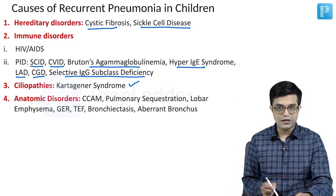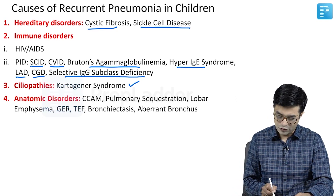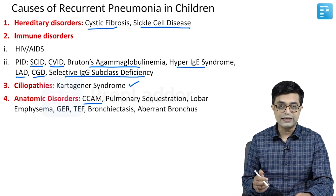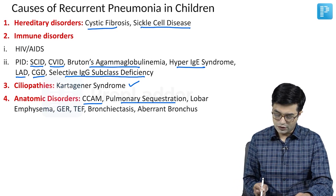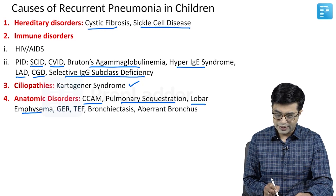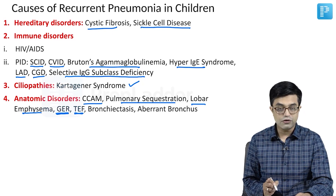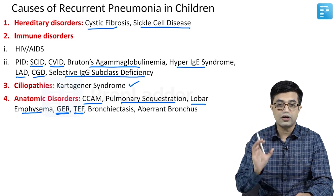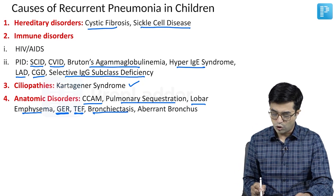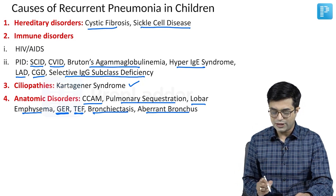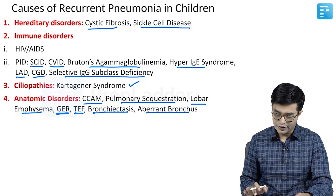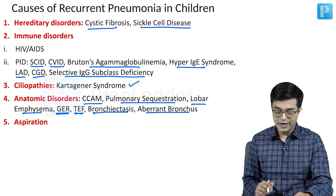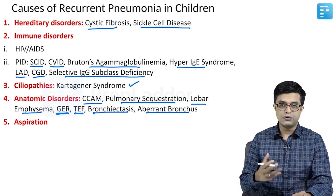Anatomic disorders like CCAM (also now called CPAM), pulmonary sequestration, lobar emphysema, asthma, gastroesophageal reflux, tracheoesophageal fistula — especially the H-type of tracheoesophageal fistula — bronchiectasis, and aberrant bronchus can cause recurrent pneumonia. And the fifth cause is aspiration.